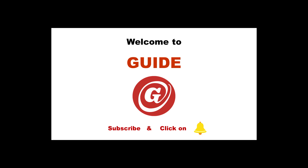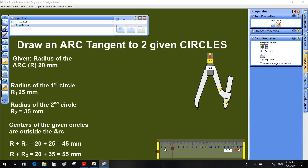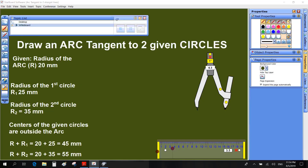Hello, and welcome to this guide. Drawing an arc tangent to two circles. The center of the arc tangent lies outside the centers of the two circles.